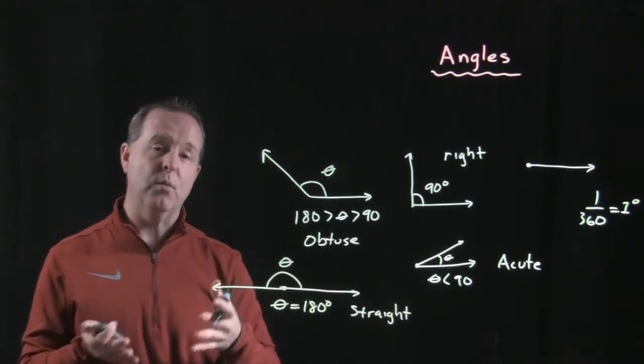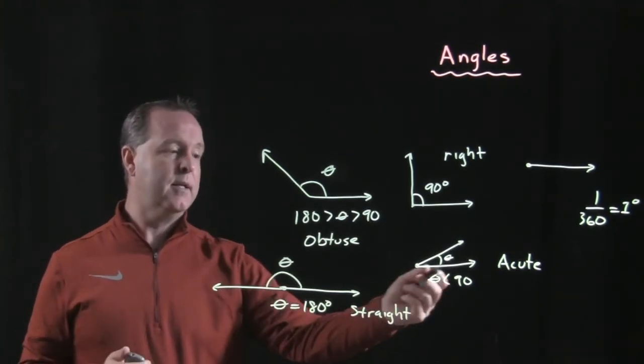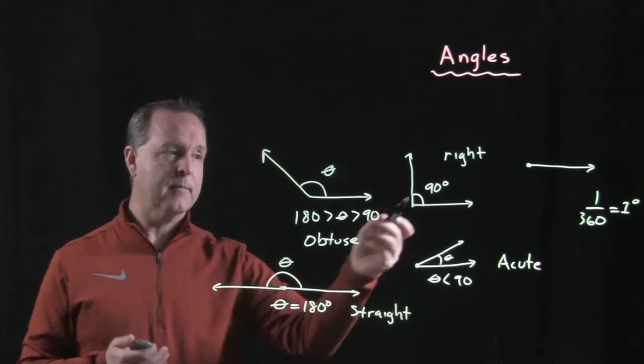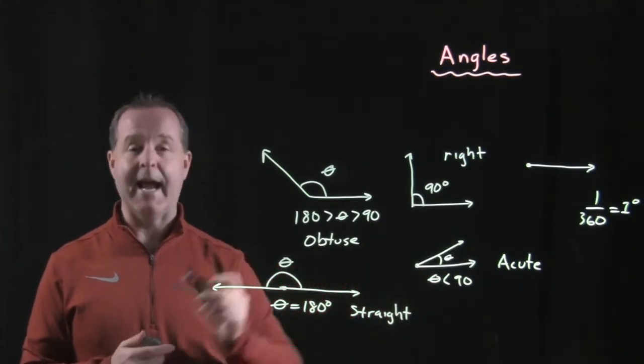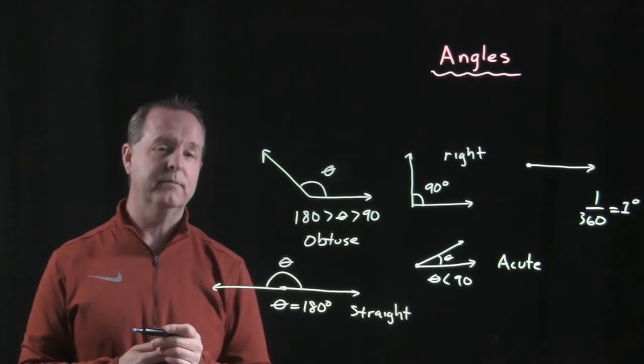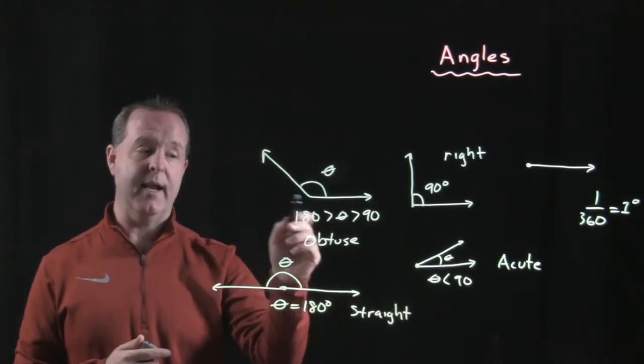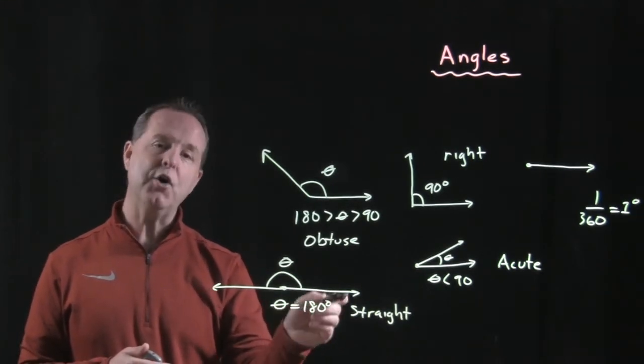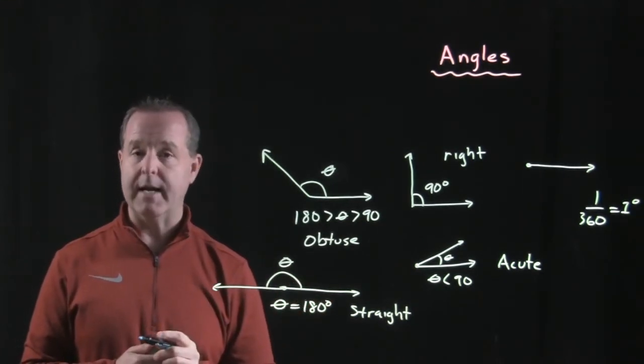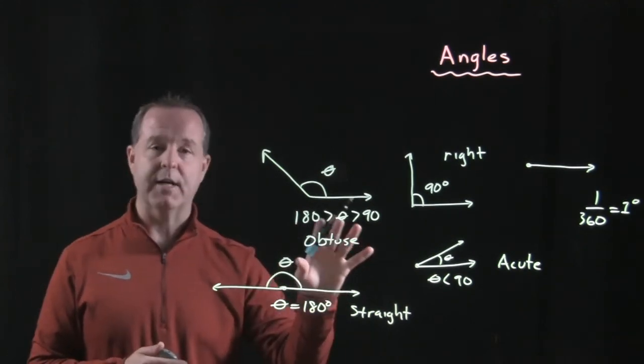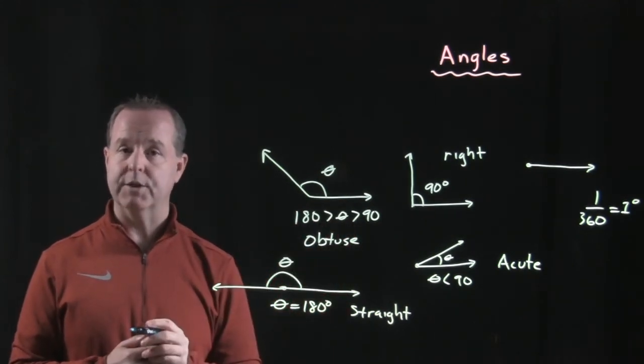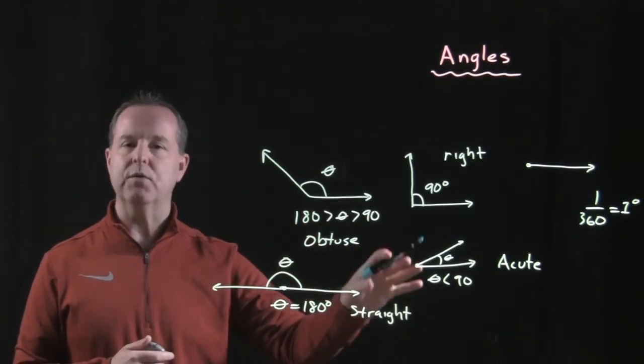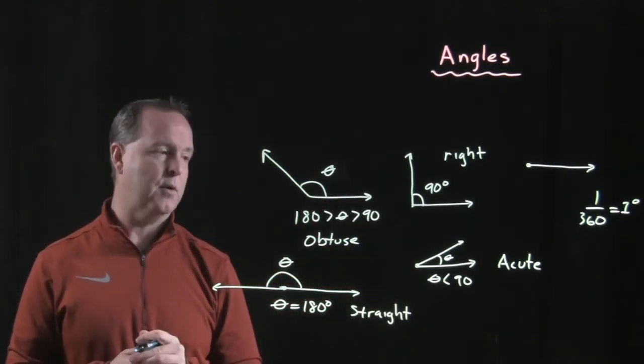So we have four different types of angles that we're going to measure throughout this course, and we can measure them in one way called degrees. An angle less than 90 degrees is an acute angle, an angle measured at 90 degrees is a right angle, an angle between 90 and 180 is an obtuse angle, and an angle at 180 degrees is a straight angle. Now these angle measurements I drew in a positive direction; likewise, I could draw them in the negative direction, but they would still either be acute, right, obtuse, and so forth.